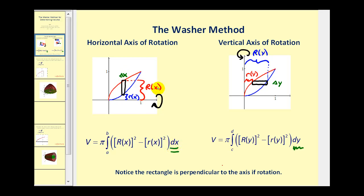The outer radius, or big R of x, would be determined by the red function. And the inner radius, or little r of x, would be determined by the blue function.